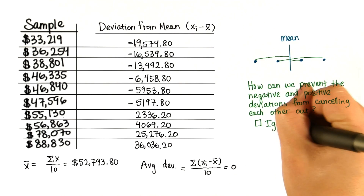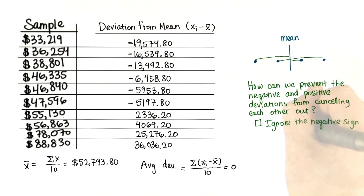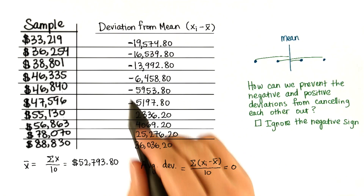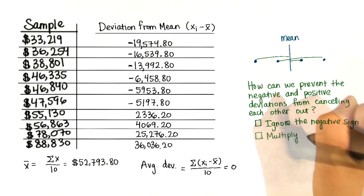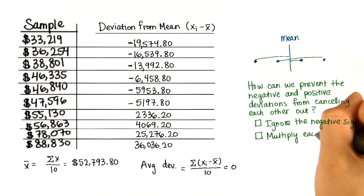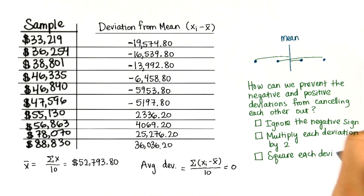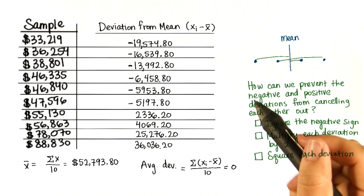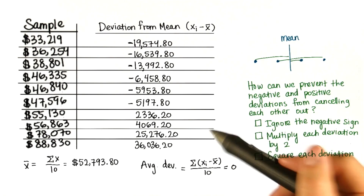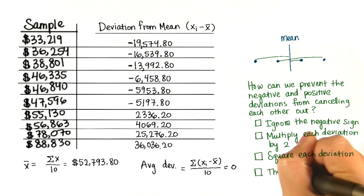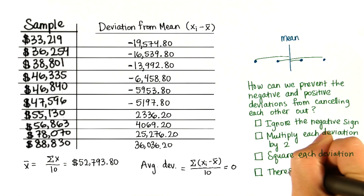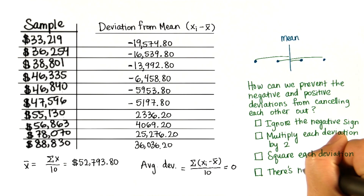Choose all that you think could work. Ignore the negative sign, at least for those with negative deviations. Multiply each deviation by 2. Square each deviation — in other words, multiply each deviation by itself. Or is there nothing we can do?